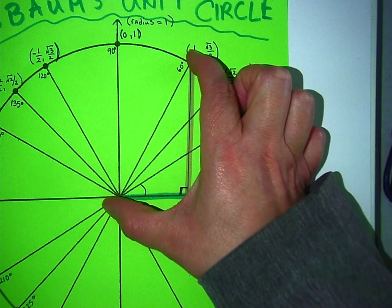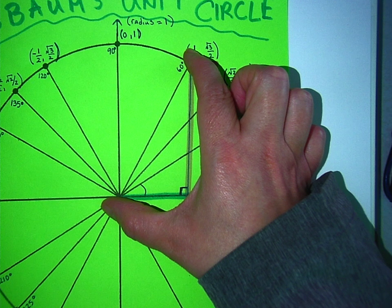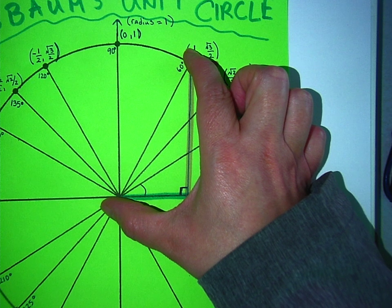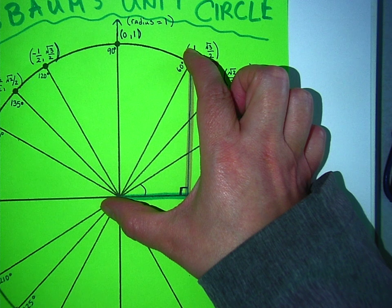What's this? That's one. How do you know it's one? Because that's the radius of the circle. Right, because it's called a unit circle. Okay.